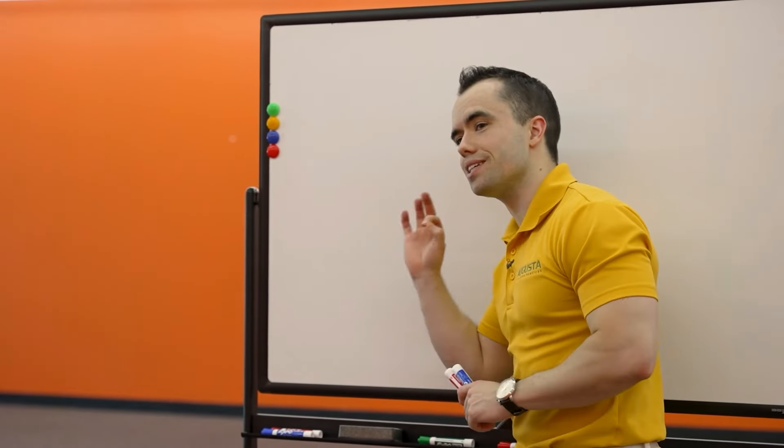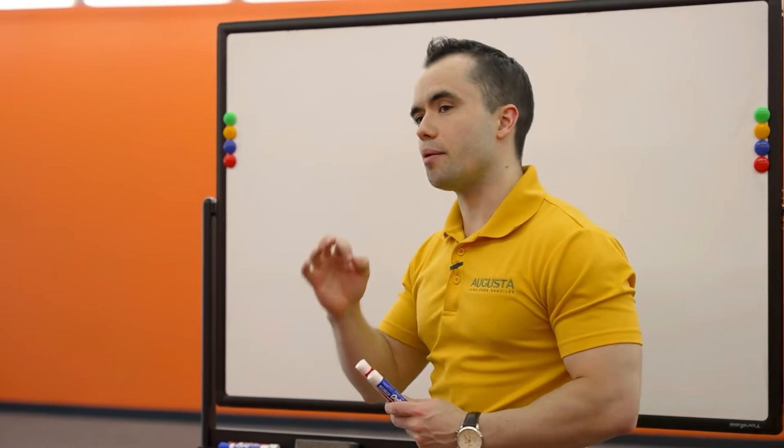My name is Mike Andes. I'm the founder of Augusta Lawn Care. We have over 150 locations around the world and over $50 million a year mowing grass. Today we're going to be going over actual numbers from a real business that's for sale and one of the owners is thinking about buying.